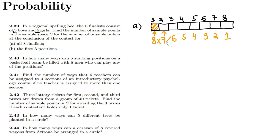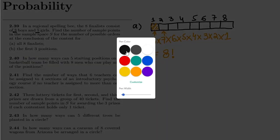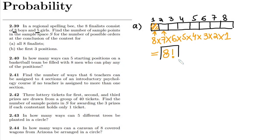After getting these values, we have to find out the distinct ordered pairs, so they have to be multiplied together because these represent the orders in which we can arrange them. This is basically 8 factorial, and that is the answer to part (a).